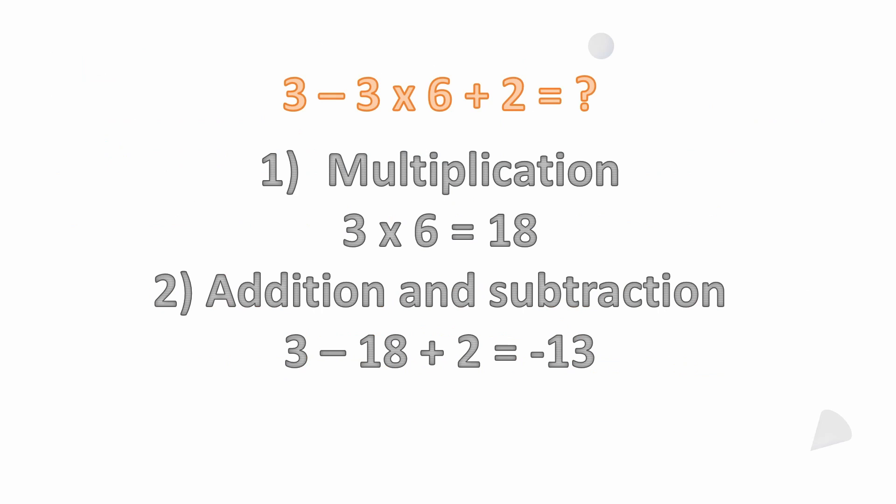So following order of operations, in this case, we have multiplication as our highest priority. So 3 times 6 is 18. Now be careful here because I see a lot of people not pay attention to the signs and where they're located. The minus sign is to the left of the 3 times 6. So basically you're saying minus 3 times 6, the same thing as negative 18.